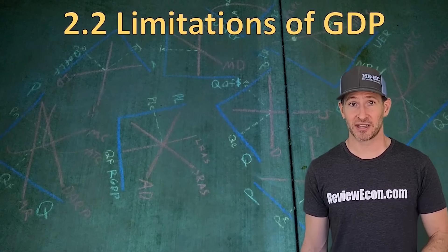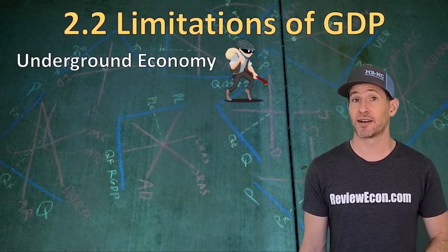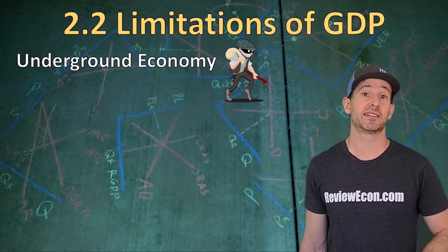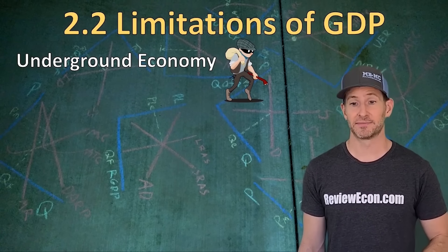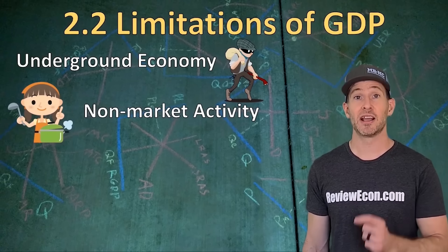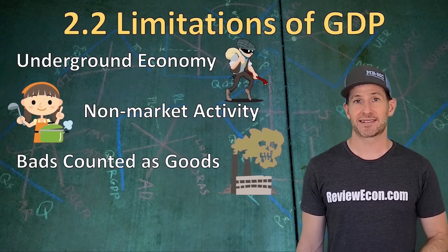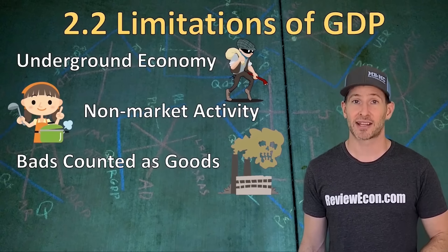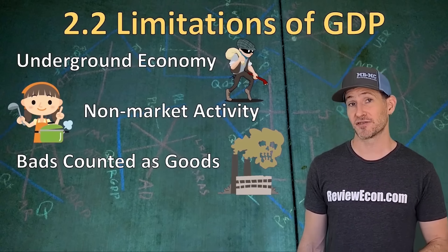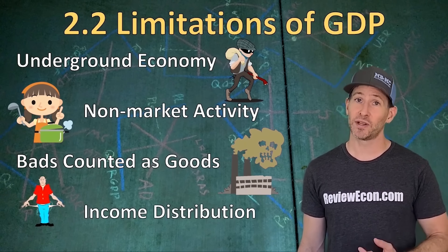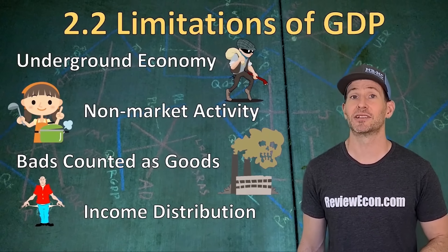Per capita GDP — GDP divided by the population — is often used by economists to determine a country's standard of living. But it has some inaccuracies. First, the underground economy: transactions like drug sales or illegal gambling rings aren't reported to the government and aren't counted. Second, home production, or non-market activities: if you cook your own food, it's not counted in GDP — it only counts if you purchase food at a restaurant. Third, bads counted as goods: pollution cleanup or natural disaster recovery is counted as a positive in GDP. Finally, GDP doesn't account for income distribution — it only tells us total well-being, not who receives it. You may want to look at the Lorenz curve or Gini coefficient from micro for that.